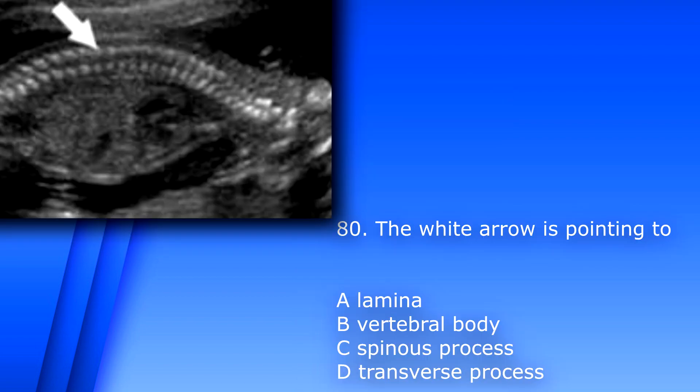Question 80. The white arrow is pointing to? A. Lamina. B. Vertebral body. C. Spinous process.